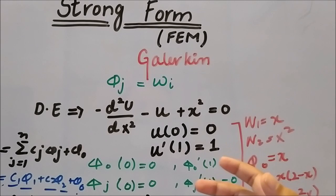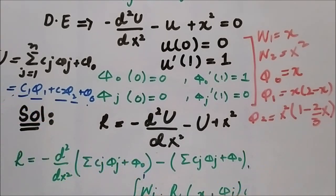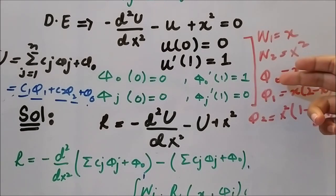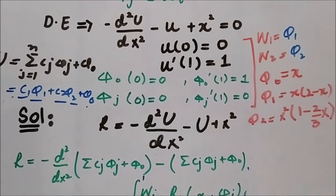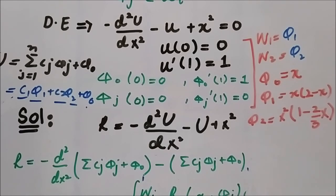That is why the Galerkin method is different from the weak or Ritz method. The main steps in the solution are the same: write the residual, plug the definition of u into the residual. Because in this technique the shape and weight functions are equal, there is no need to specify w1 and w2 separately — phi1 equals w1 and phi2 equals w2. If you are confused about which steps to follow, review the last video on the Petrov-Galerkin method; the link will be in the description.